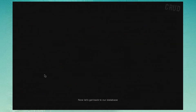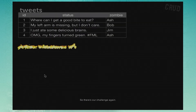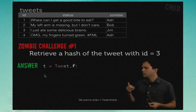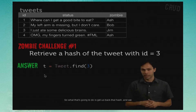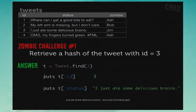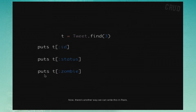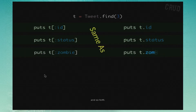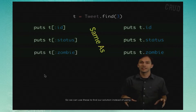Let's get back to our database table and our challenge. Now I'm going to show you the actual solution — the code we want to write: t equals Tweet.find(3). That's going to get us back that hash, and we can then do puts t id, which gets us three; puts t status gets 'I just ate some delicious brains'; and puts t zombie gets us back Jim. In Rails we can also write puts t dot id, puts t dot status, and so on.